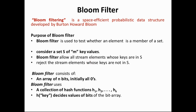A Bloom filter consists of an array of n bits. Initially, all bit values are equal to 0. The Bloom filter uses a collection of hash functions h1, h2, ..., hk. Each hash function applied to a key value decides which bit positions in the bit array are set.